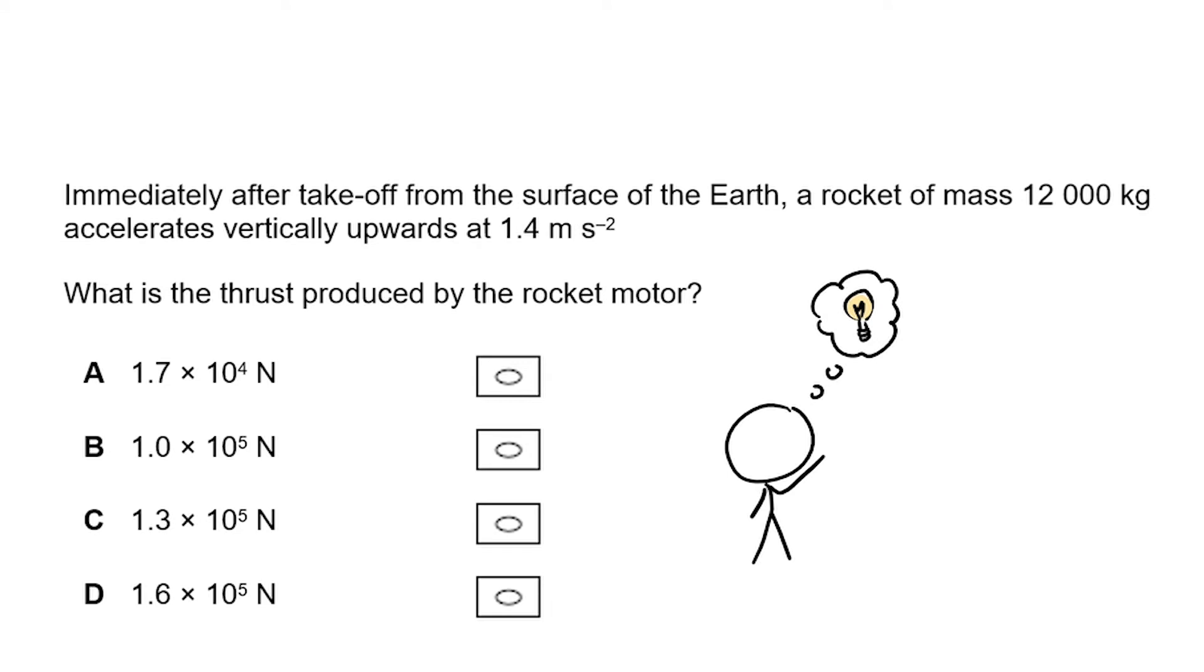Immediately after takeoff from the surface of the Earth, a rocket of mass 12,000 kilograms accelerates vertically upwards at 1.4 meters per second squared. What is the thrust produced by the rocket's motor? So we're given a few options, and we know the mass of the rocket and its acceleration.